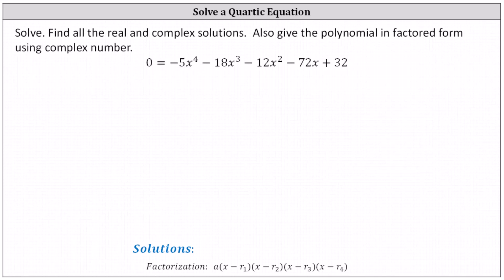We want to solve the given polynomial equation. We're asked to find all of the real and complex solutions, and also give the polynomial in factored form using complex numbers. We want to begin by determining the real rational solutions. We could list all the possible real rational solutions by listing out the factors of the constant term of 32 divided by the factors of the leading coefficient of negative five, but instead we're going to graph the related polynomial function and look for the real rational solutions by identifying the x-intercepts.